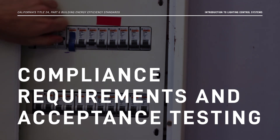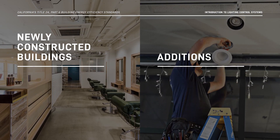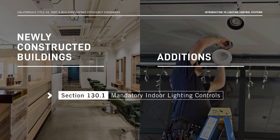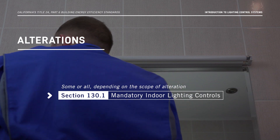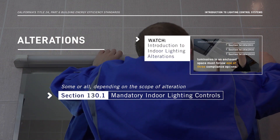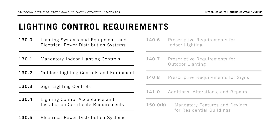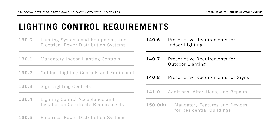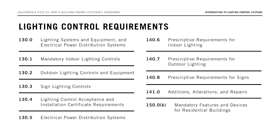Now that we've learned about lighting control devices and systems, let's go over a few requirements and review acceptance testing. For newly constructed buildings and additions, lighting controls installed to meet compliance with the Energy Code must also meet the mandatory requirements in section 130.1. For lighting alterations, either some or all of the requirements in section 130.1 may apply depending on the scope of the alteration. Learn more about alterations in our Introduction to Indoor Lighting Alterations video. The Energy Code contains lighting control requirements in sections 130.0 through 130.5, sections 140.6 through 140.8, sections 141.0, and section 150k. These sections will tell you when and where lighting controls are required and how they must operate.